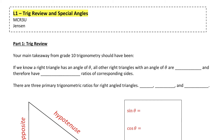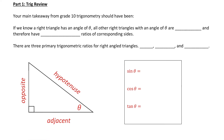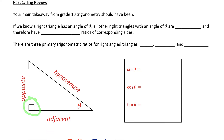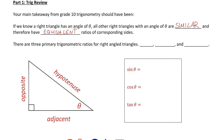In grade 10 trigonometry, you should have learned that if you have a right angle triangle with a reference angle of theta, all other right angle triangles with that same reference angle of theta would be the exact same shape, meaning that they would be similar triangles. Because they're the exact same shape, similar triangles have a property that tells us their ratios of corresponding sides are equivalent. Now in any triangle, there are three sides, so there are three different pairs you can make from those sides. That's why there are three primary trig ratios.